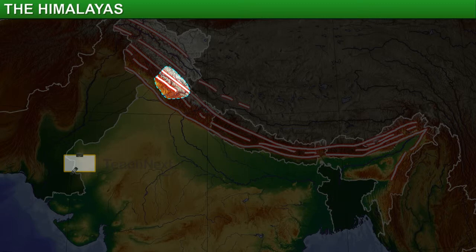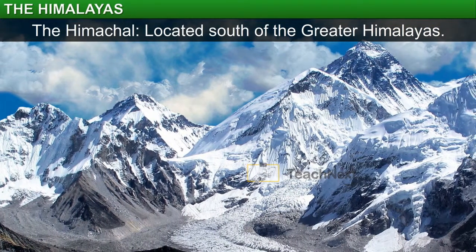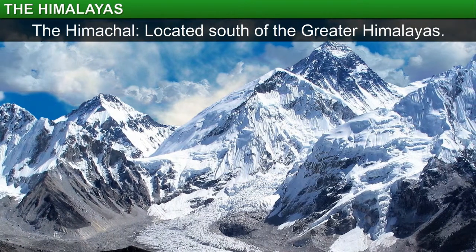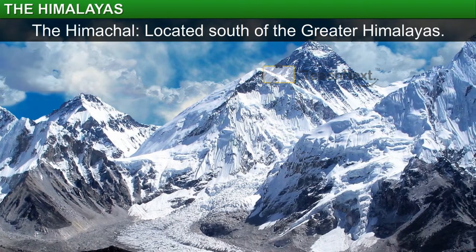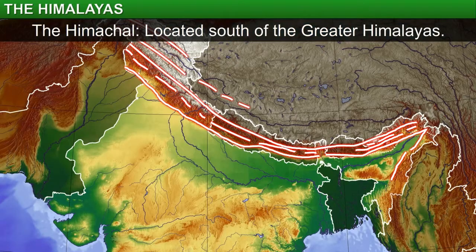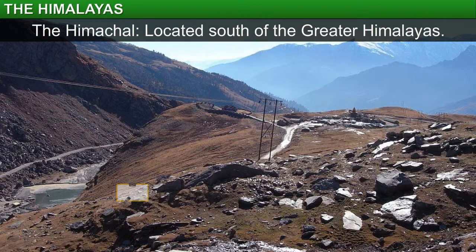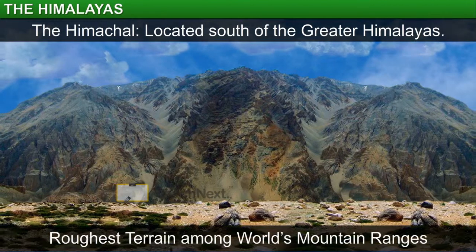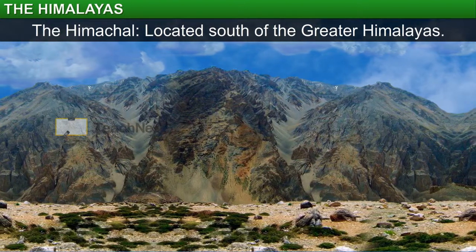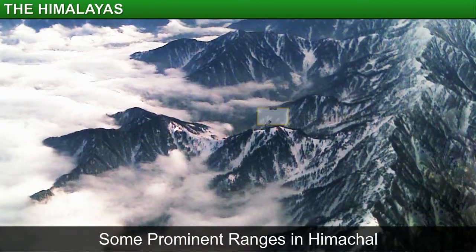The next range, which is known as the Himachal, is located south of the Greater Himalayas. The height of mountains in this range is between 3,700 and 4,500 meters, as against the average height of 6,000 meters in the Great Himalayas. Hence, this range is also referred to as the Lesser Himalayas. The average width of the Himachal range is 50 kilometers. This range has the roughest terrain among all the mountain ranges in the world. The terrain is composed of highly compressed rocks that have undergone considerable change in composition or appearance — in other words, the Himachal is made up of altered rocks.